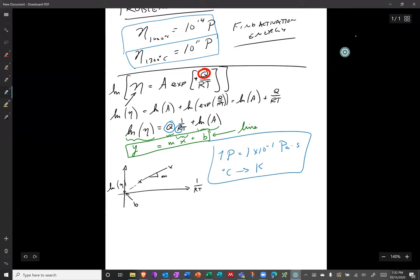So perform your unit conversion. Plug two points in. Find the slope. Find the intercept. And the slope will give you the activation energy.